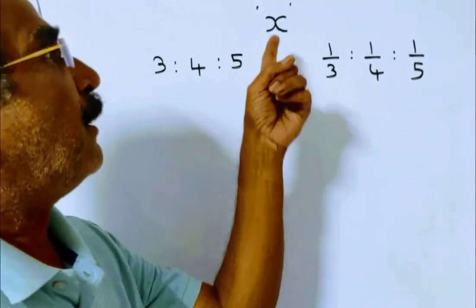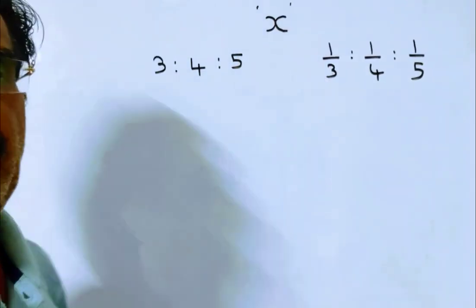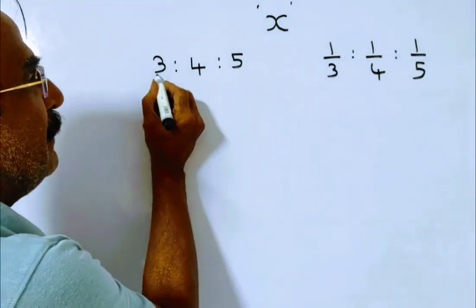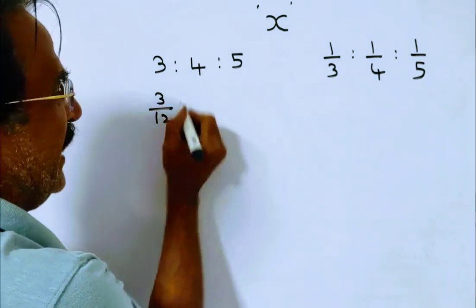Friends, say the total property is x. If this x is divided in the ratio 3 is to 4 is to 5, the lowest person gets 3 by 12. 3 plus 4 plus 5 equals 12, so 3 by 12 of x.